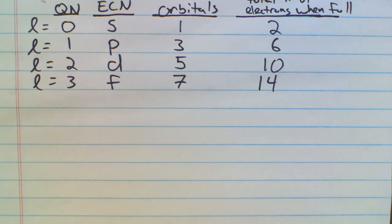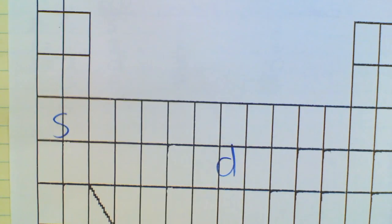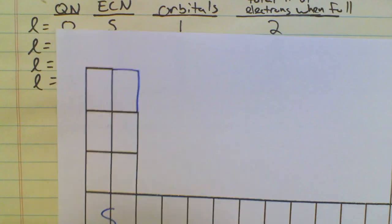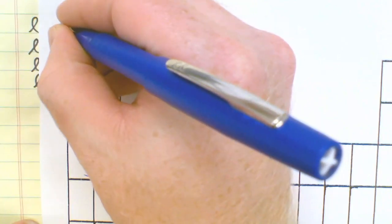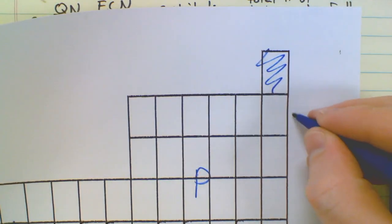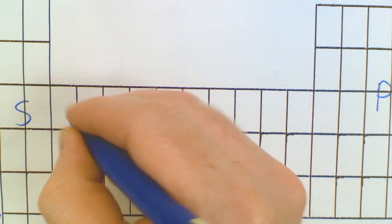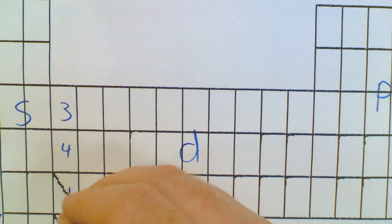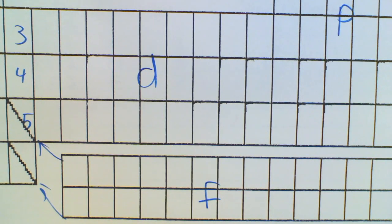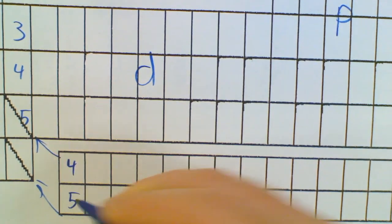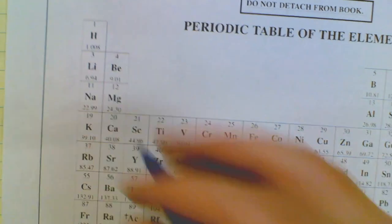Something that will help you as you start doing electron configuration notation is to label your n values on the subshell sheet, because these stay the same. Recall that in the D subshell, the transition metal block, our n value dropped by one — this is 3, 4, 5. And in our F subshell, the n value drops by two. So this is really n equals 4 here, and n equals 5. It's not a bad idea to put those n values onto your periodic table as well — label S, P, D, F, and the n values.